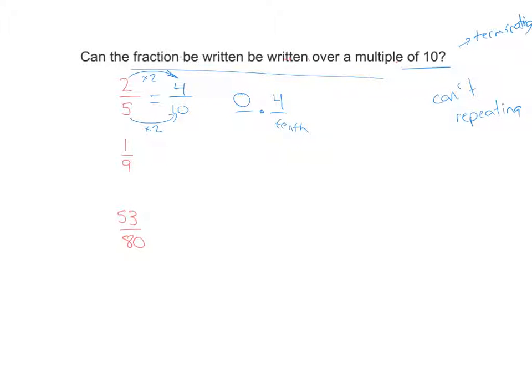So any time that you could write a fraction as out of 10 or out of 100 or out of 1,000, it would be considered a terminating decimal.